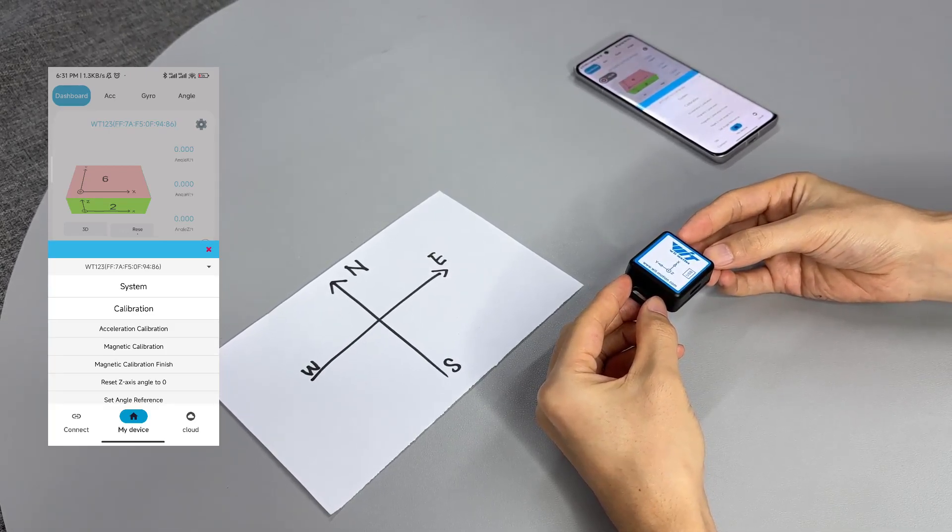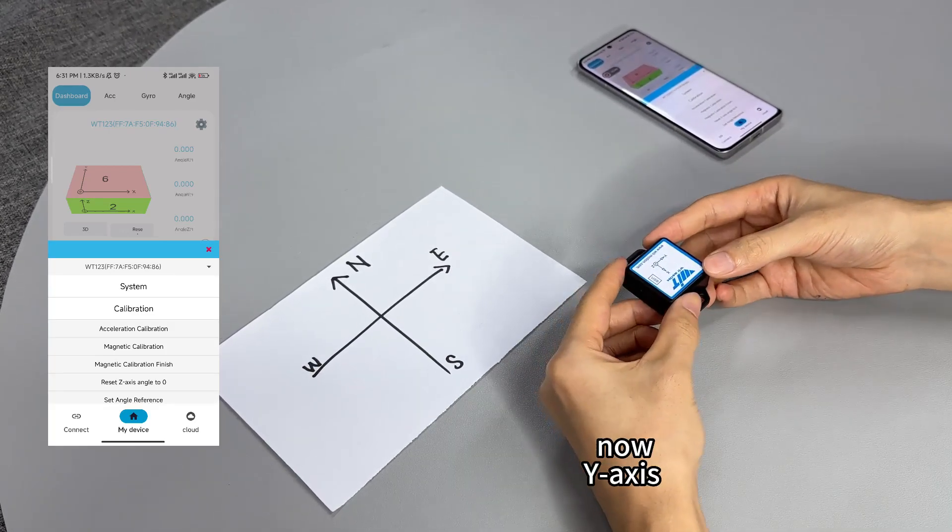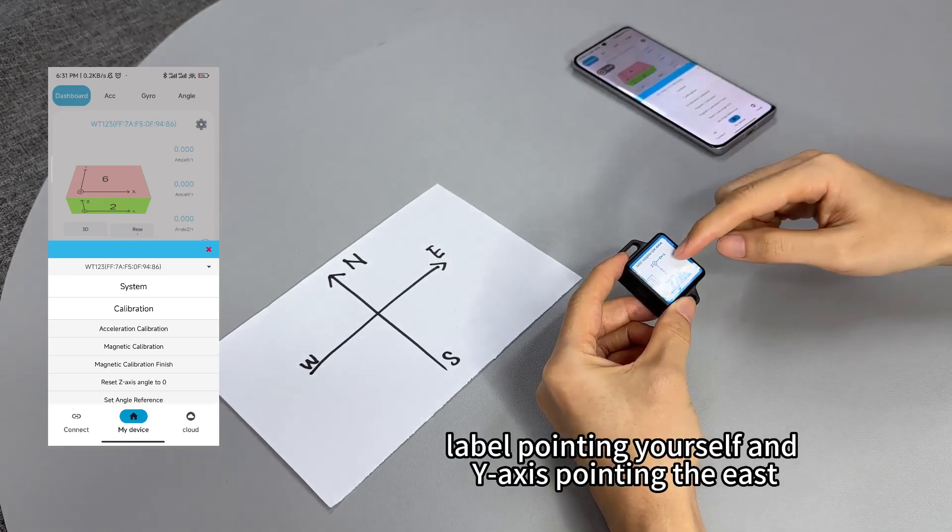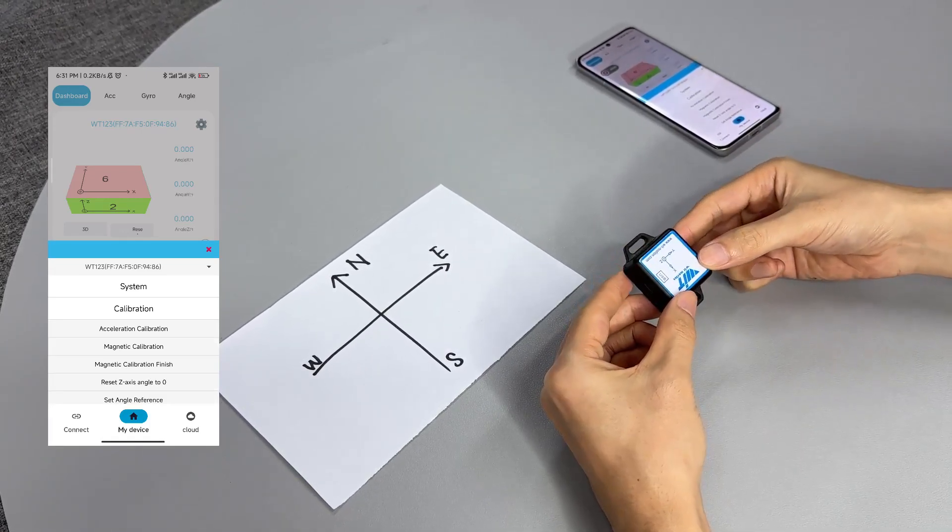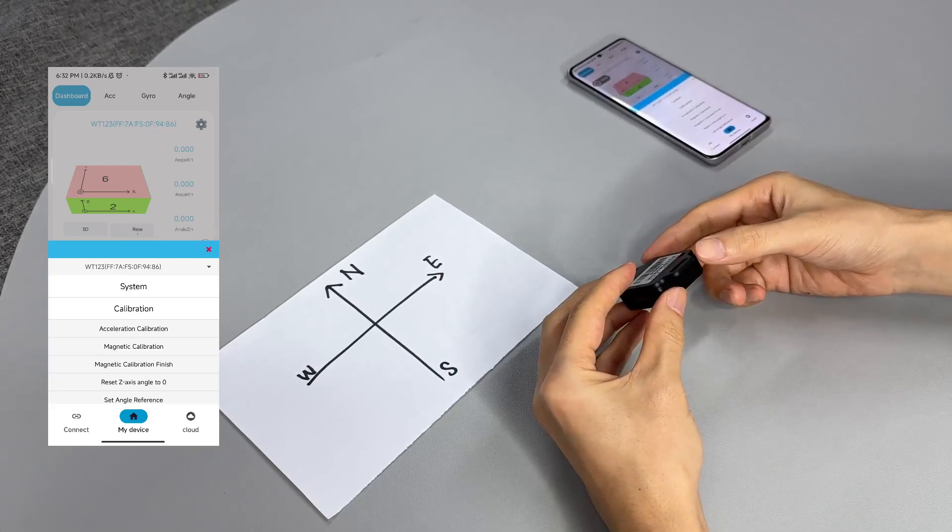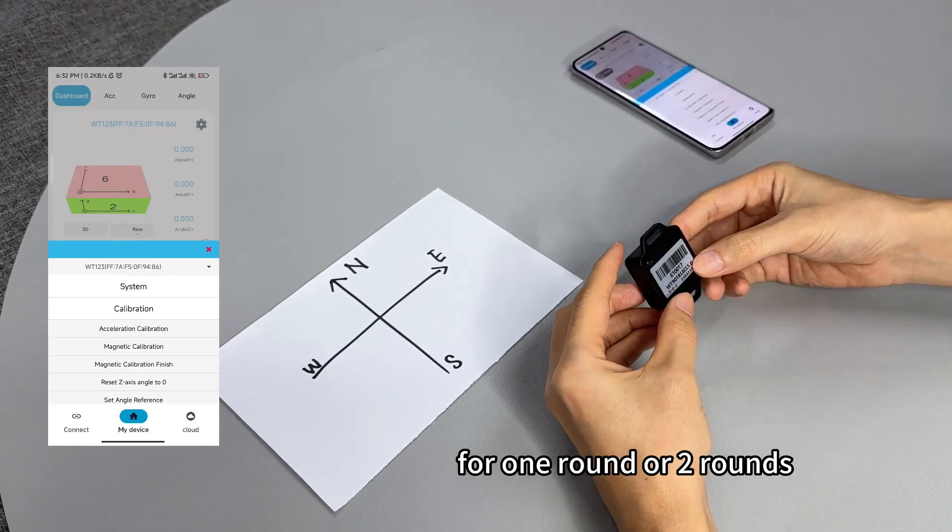Okay, and now y-axis label pointing to yourself and the y-axis pointing to the east. Slowly rotate for one round or two rounds.